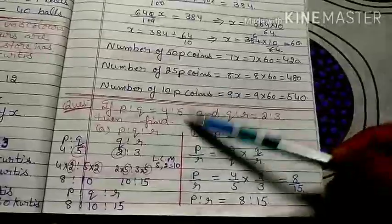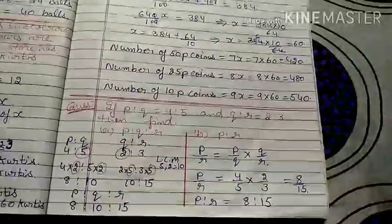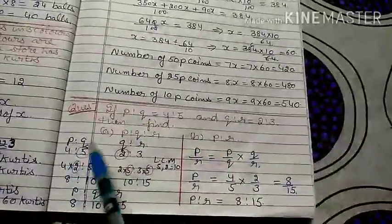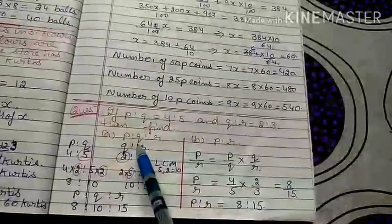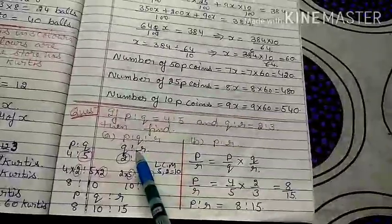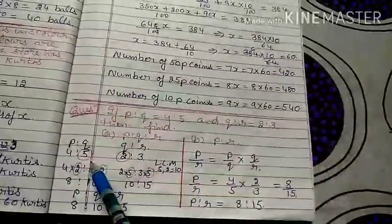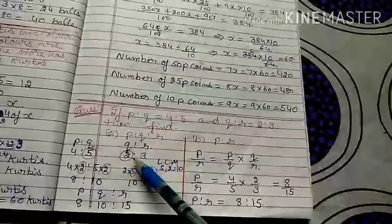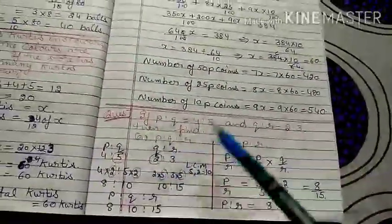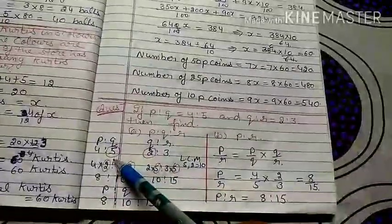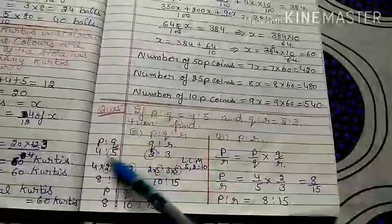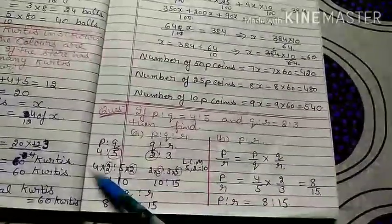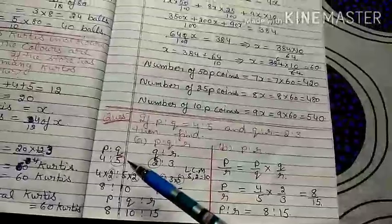Eighth question: If p:q = 4:5 and q:r = 2:3, find p:q:r and p:r. To find p:q:r, the q values must be the same in both ratios. Here q is 5 in the first ratio and 2 in the second, so find the LCM of 5 and 2, which is 10. Multiply the first ratio by 2 to get 8:10, and multiply the second ratio by 5 to get 10:15.